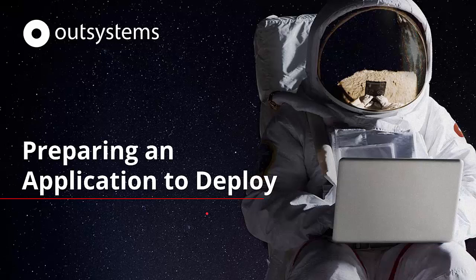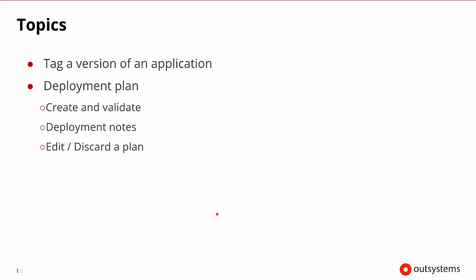Welcome to this session on preparing an application to deploy. We're going to discuss how to tag a version of an application and create its deployment plan. That will include how to create and validate the deployment plan, add deployment notes to it, and potentially edit or discard the plan.